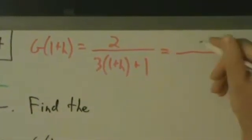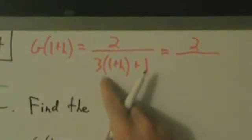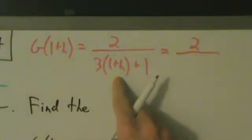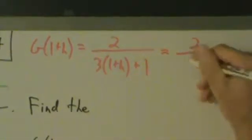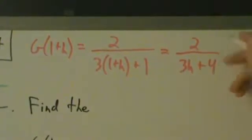So we just want to expand and simplify that. So when we do that, we're going to get 2 on the top still. And then here, this is going to be 3 + 3h + 1, so let's go ahead and write that as 3h + 4. Alright, so that's G(1+h).